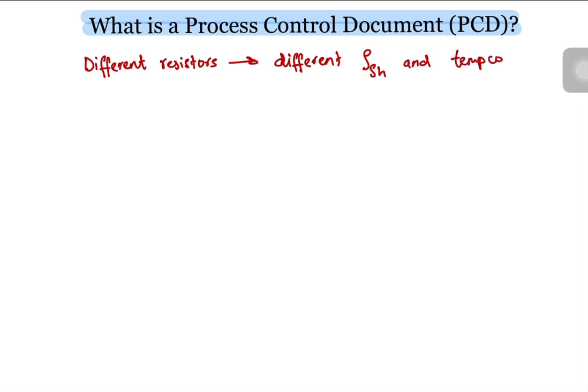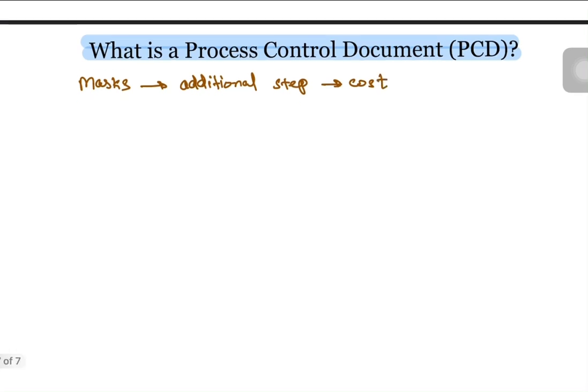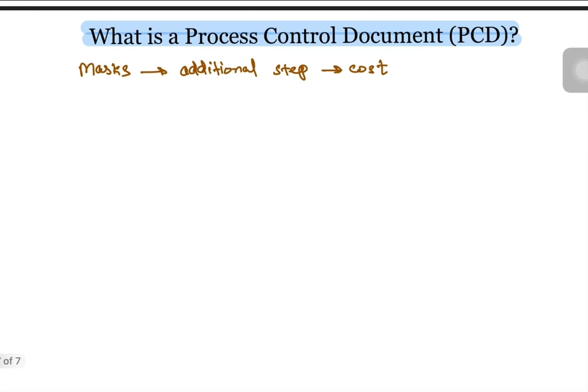Moreover, the PCD also tells you how many masks are needed to fabricate a device. Masks are like filters. They selectively allow us to deposit a certain material or dopant in a particular region instead of the whole wafer. The number of masks required essentially tells you how complex it is to fabricate the device. More masks means more cost. Your boss might not allow that in some cases, so check that out as well.